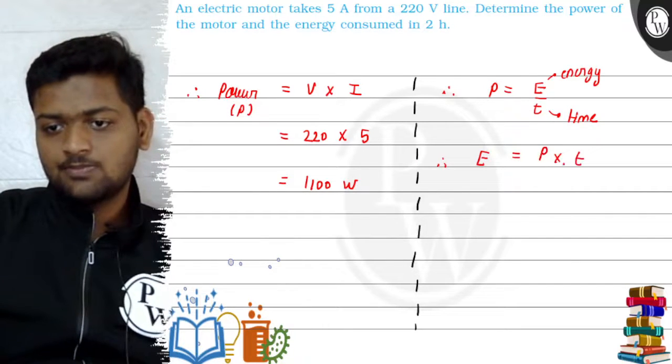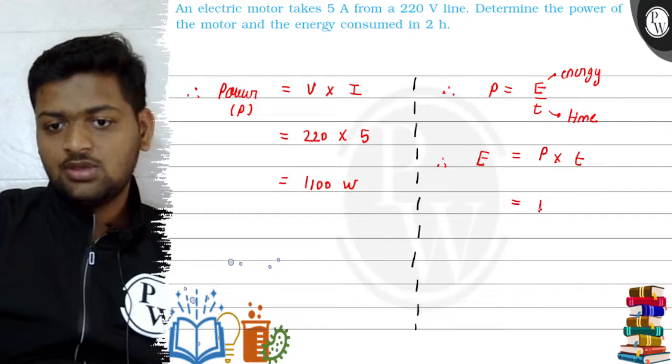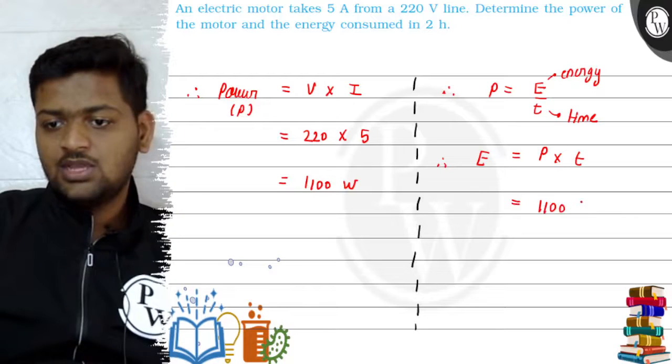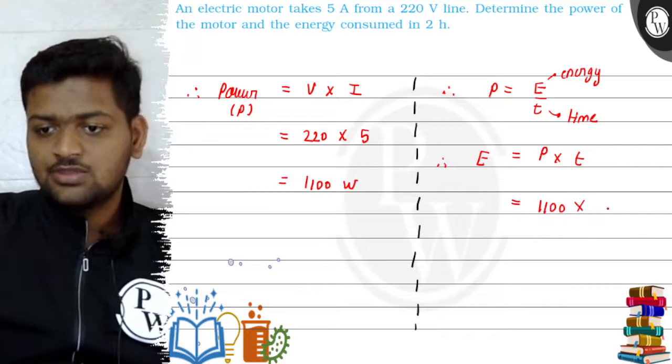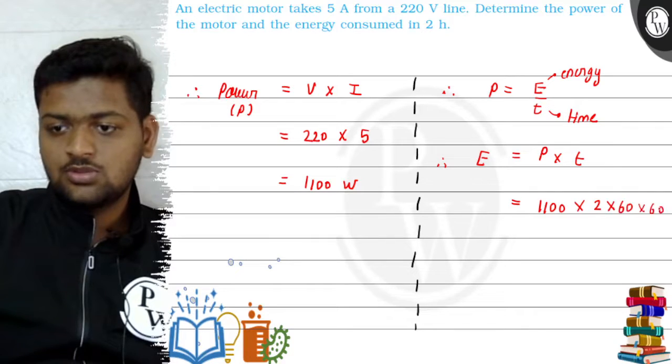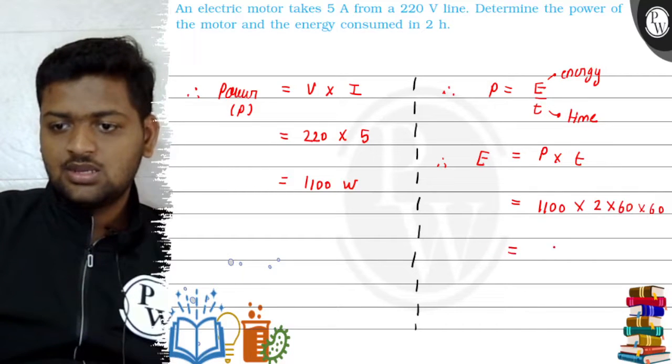Now I know power is 1100 watts, which we got from the previous formula. Time is 2 hours. I'll convert it into seconds: 2 × 60 × 60.